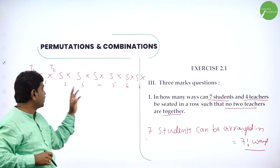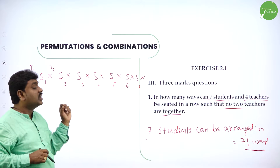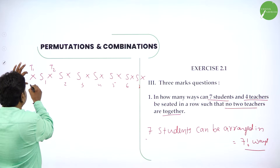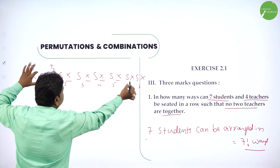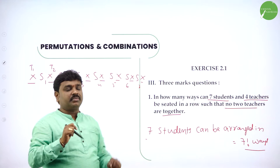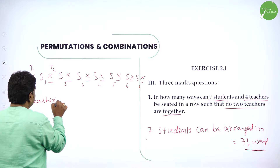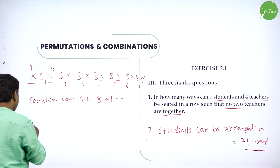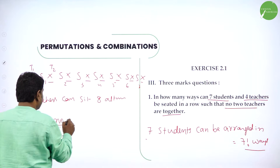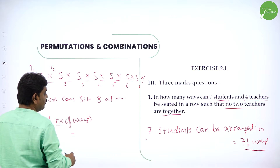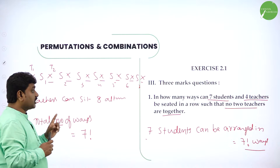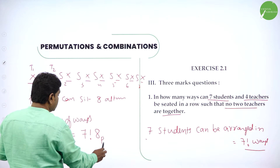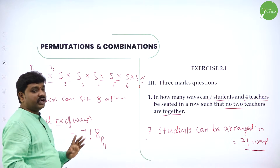7 students can be arranged in 7 factorial ways — no restriction. But teachers have a restriction: they should not sit together, so they should be between students, meaning alternate places. Alternate places give 8 positions. For 7 elements we have 8 alternate places. We have 4 teachers, and 4 teachers can sit in 8 places in 8P4 ways.